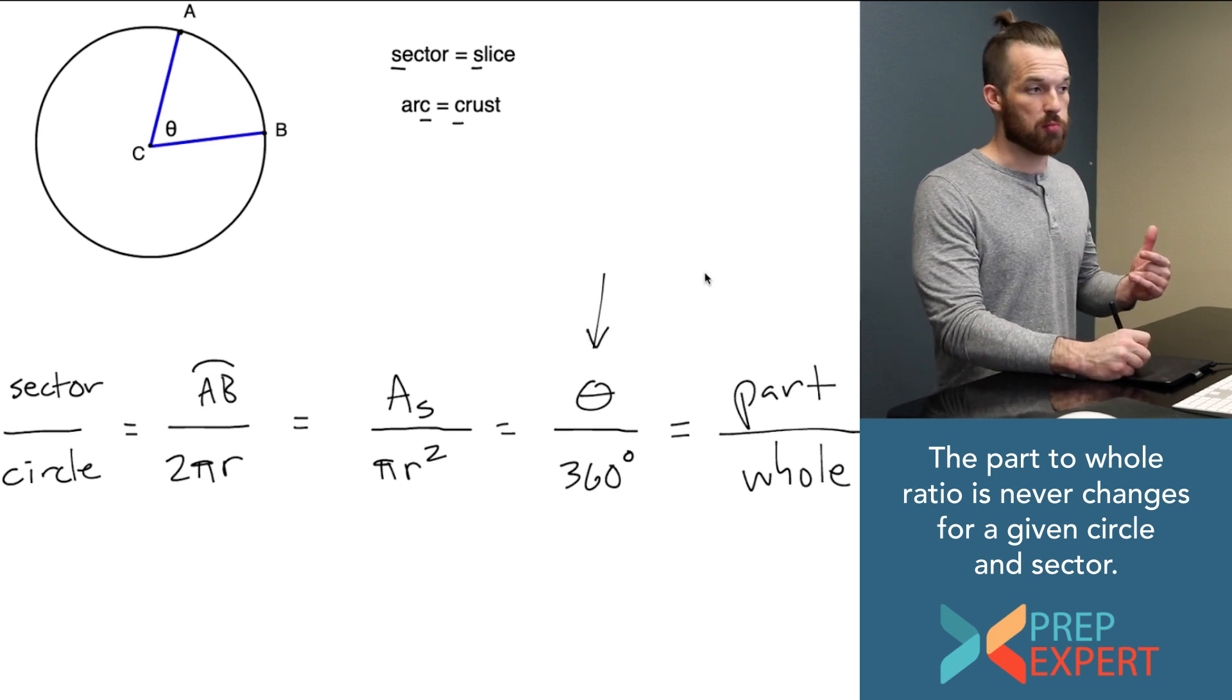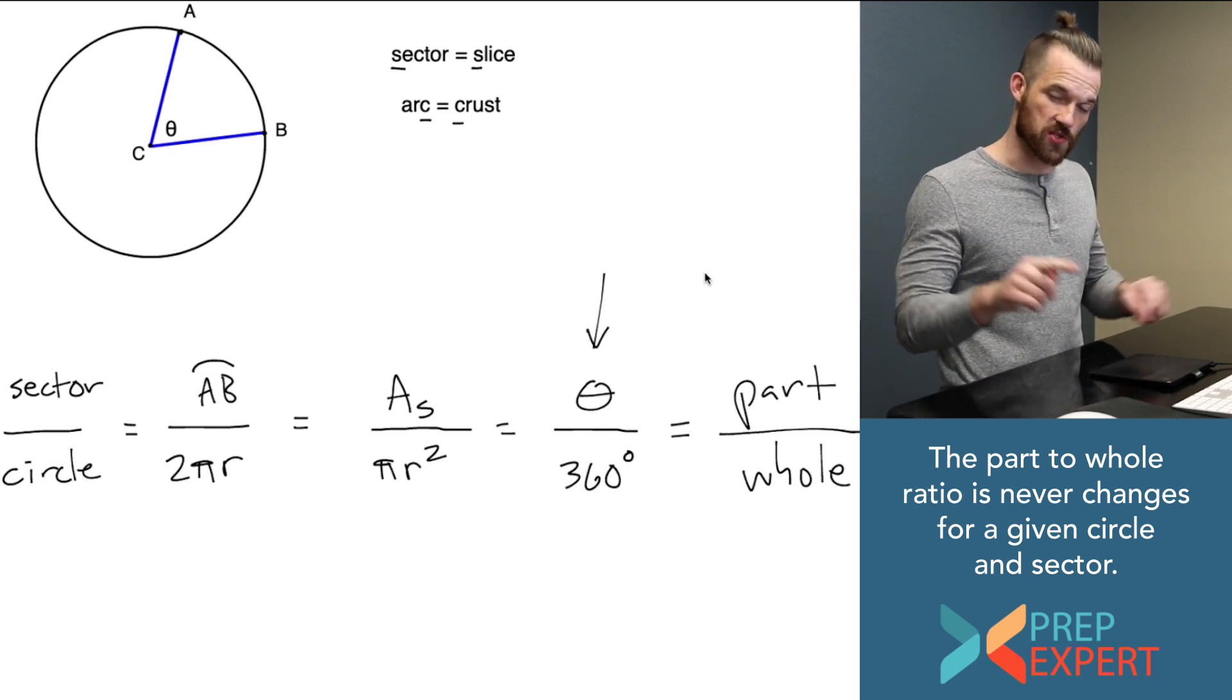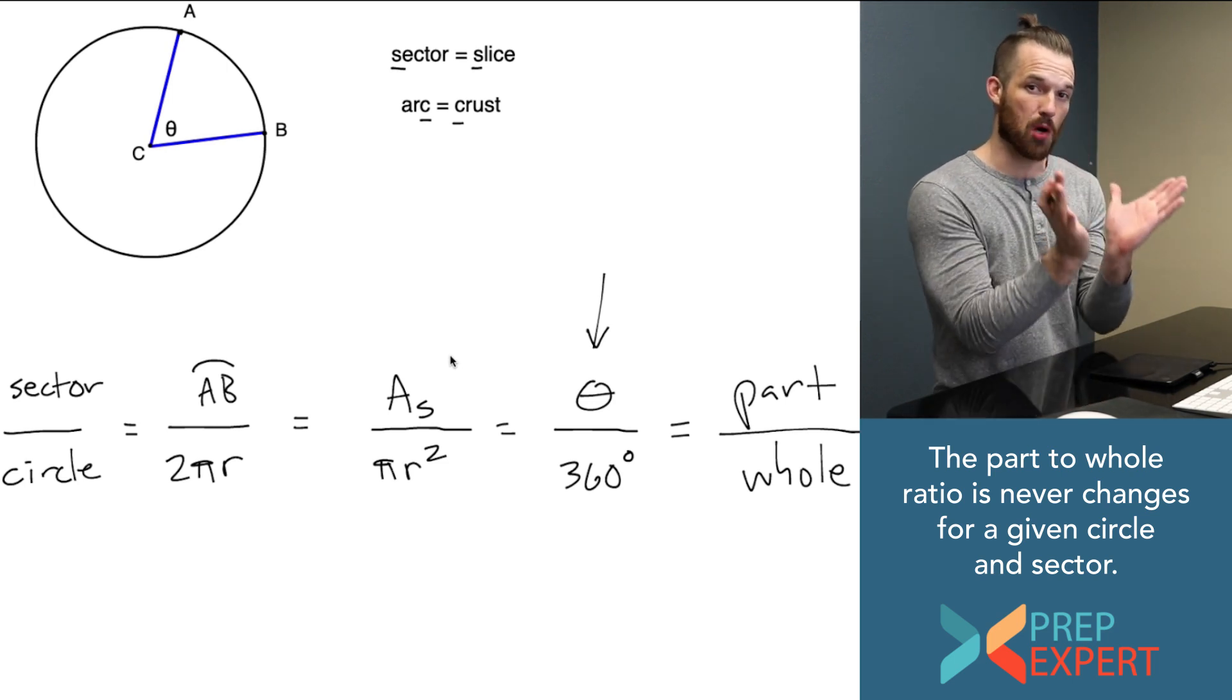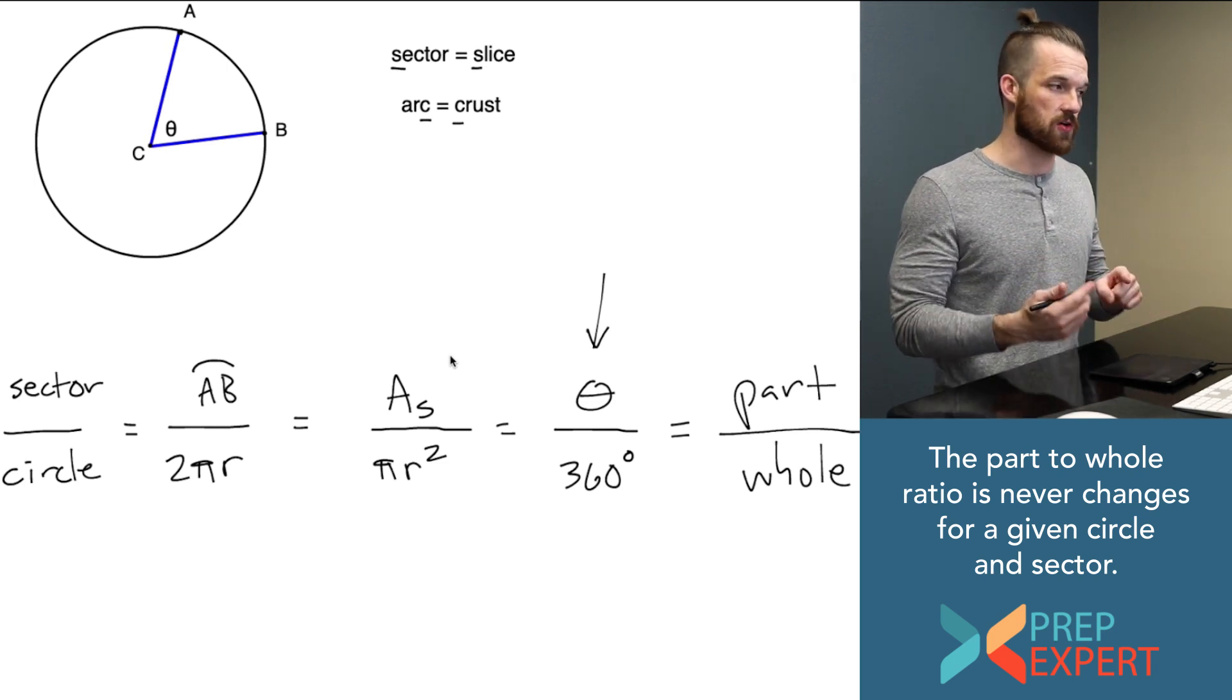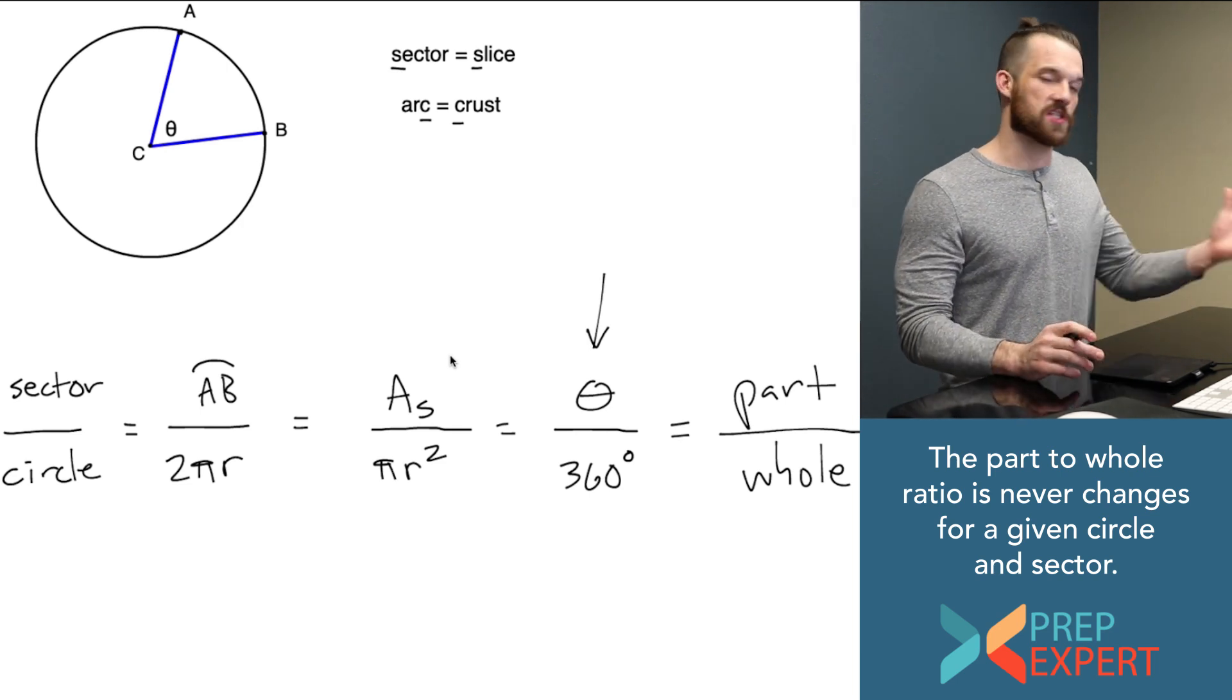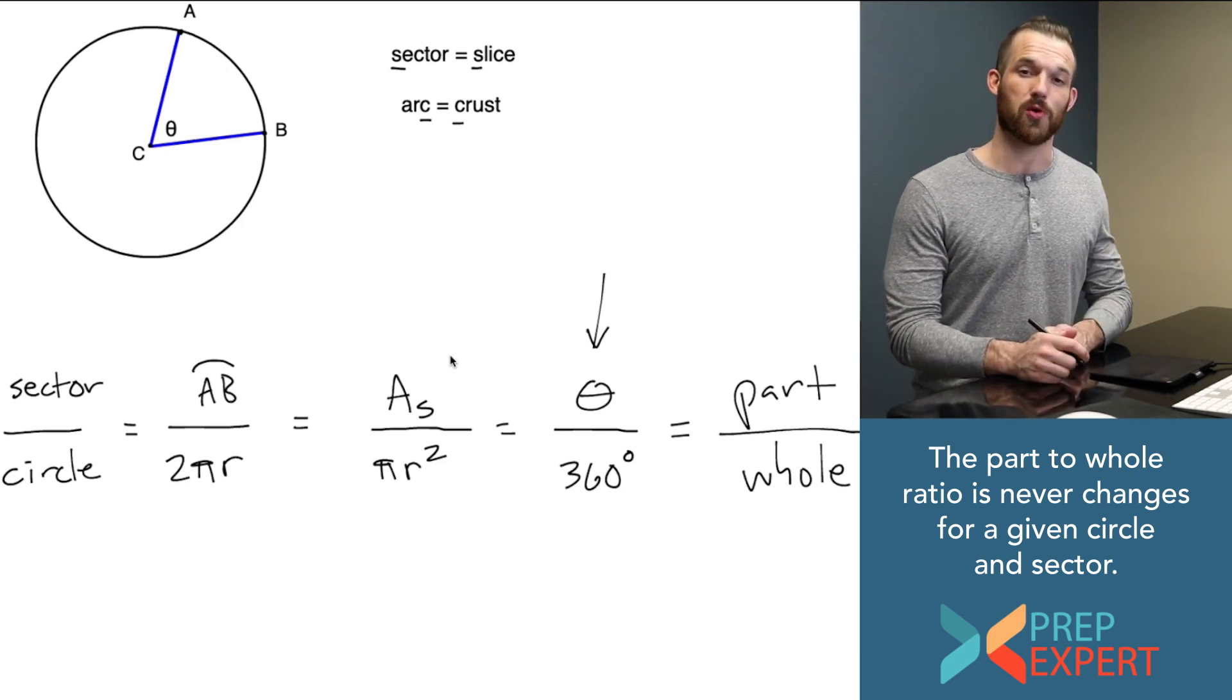If you can just remember part over whole always equals part over whole, then you never have to miss another one of these questions. Theta is a part of the central angle of the circle as a whole, which is 360 degrees. The area of the sector is a part of the whole that is the area of the circle, and arc length AB is a part of the circumference.